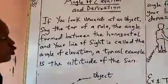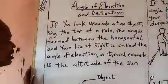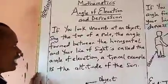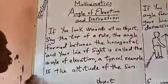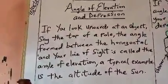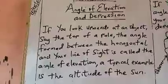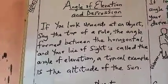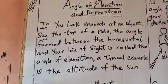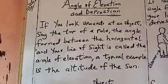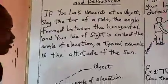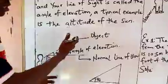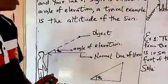Now if you look upward at an object — say the top of a pole — the angle formed between the horizontal and your line of sight is called the angle of elevation. A typical example is the altitude of the sun, where altitude has to do with height.